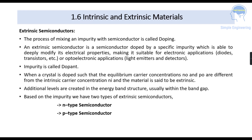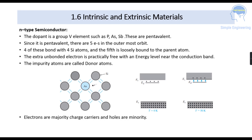First we will see about N-type semiconductor. In this extrinsic semiconductor we are adding an impurity — the dopant. If we are taking Group V elements such as phosphorus and arsenic, it is called an N-type semiconductor because it is a pentavalent dopant. Pentavalent means that the element — phosphorus or arsenic — has five electrons in the outermost orbit. Four of these will be in a bond with the silicon atoms and the fifth one will be loosely bound. That extra unbonded electron is free to move within the energy level near the conduction band, and the impurity atoms are called donor atoms.